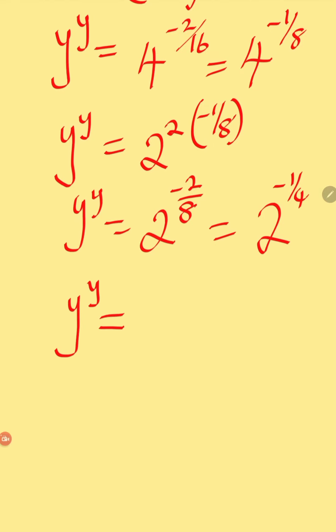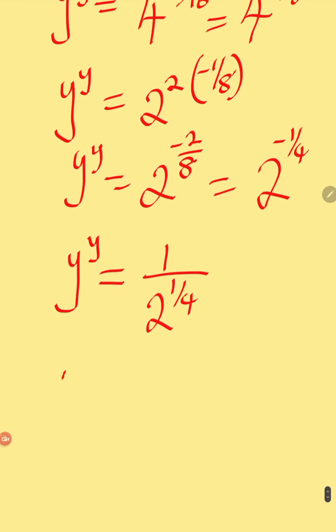y to the power of y can become 1 over 2 to the power of 1 over 4, which gives us y to the power of y equals 1 over the fourth root of 2.